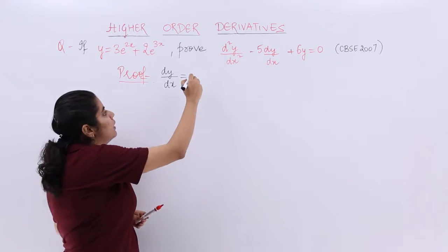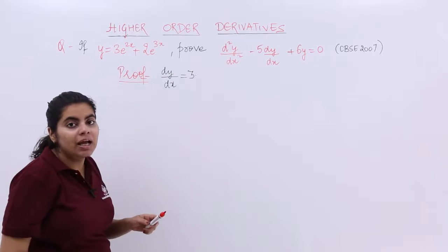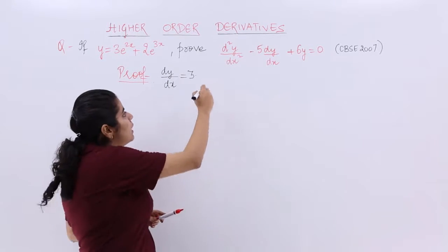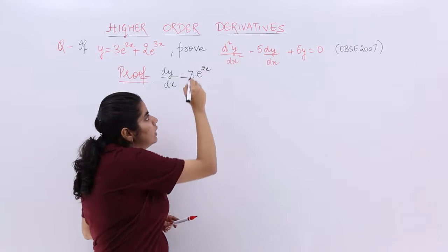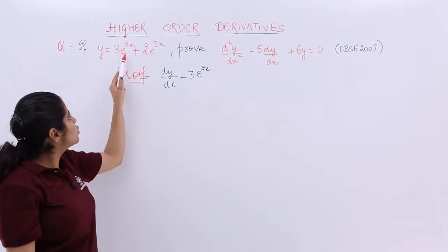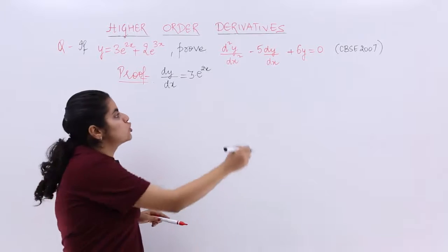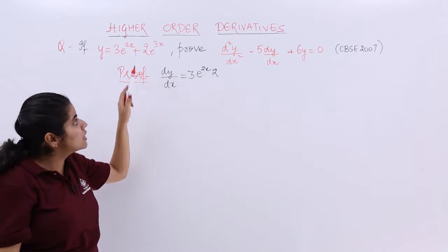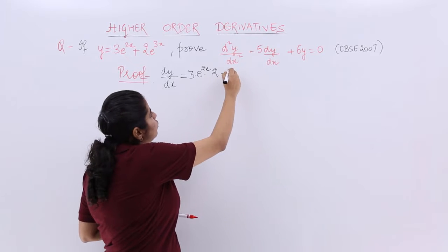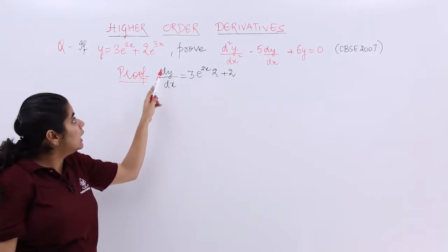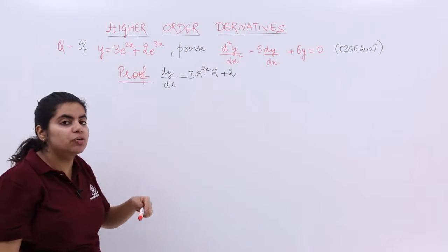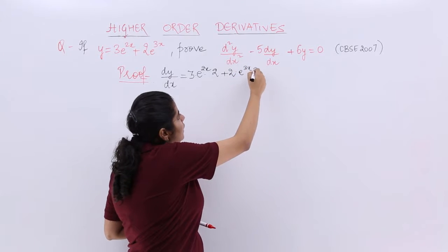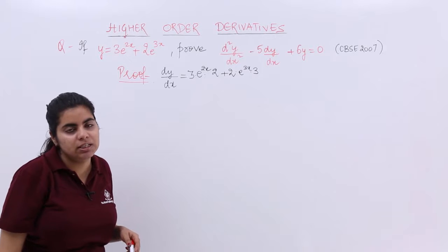So if 3 is there, let's keep 3 as it is. e raised to the power 2x is there. Differentiation of e^(2x) is e^(2x) only, but you also have to follow the chain rule, so the differentiation of 2x is 2. Then it is plus 2, then e raised to the power 3x. Differentiation of e^(3x) is e^(3x) only, but 3x differentiation is also there, which is 3.